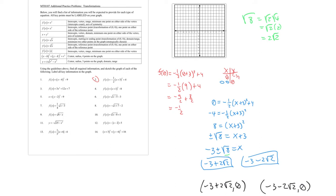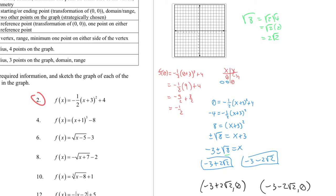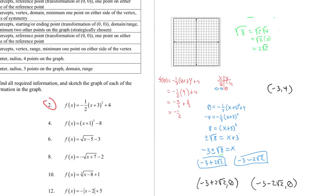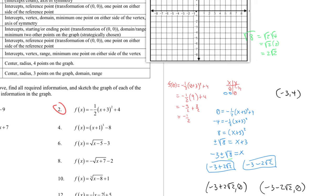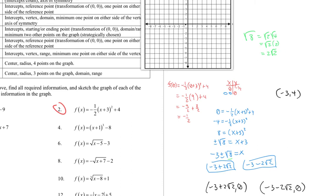The vertex is pretty easy to find — just by looking at the function, it's (-3, 4). Let's start plotting points. The y-intercept (0, -1/2) is right here, the vertex (-3, 4) is right there, and the two x-intercepts at -3 ± 2√2 can be approximated with a calculator and plotted here and here.